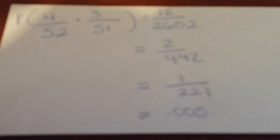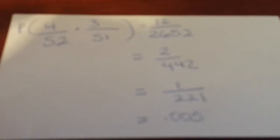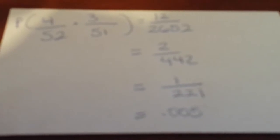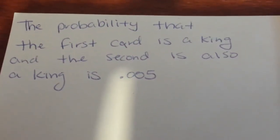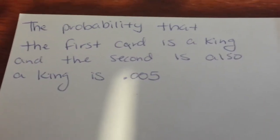And we turn it into a decimal which equals 0.005. The probability that the first card is a king and the second card is also a king is 0.005.